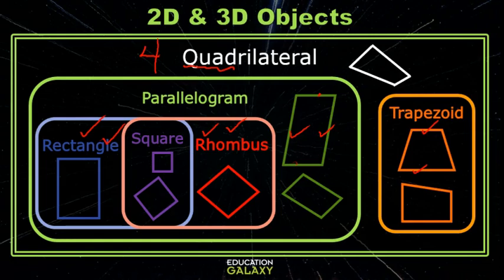Now remember a square can also be called a rhombus, a rectangle, a parallelogram, and a quadrilateral. It belongs to all of these groups.